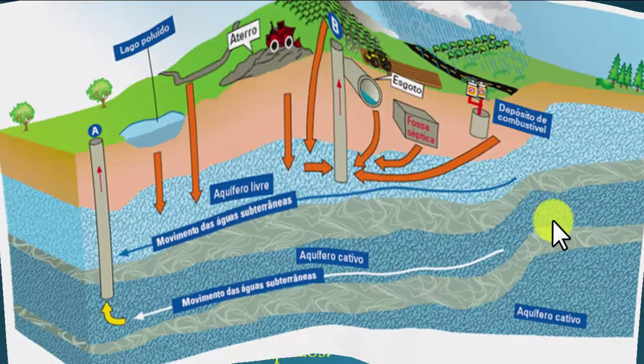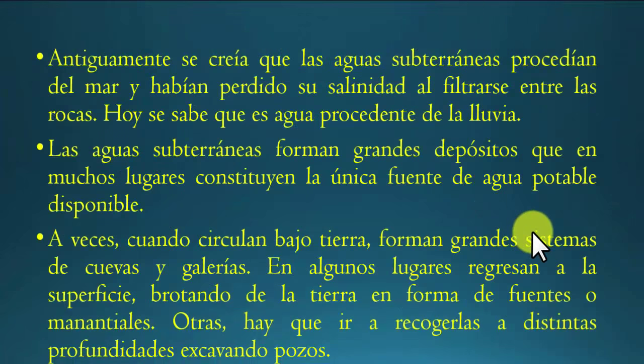Antiguamente se creía que las aguas subterráneas procedían del mar y habían perdido su salinidad al filtrarse entre las rocas. Hoy se sabe que es agua procedente de la lluvia. Muchos pensaban que el mar se infiltraba a través de la roca y encontraba galerías por las cuales se movía, y que con el tiempo las sales se precipitaban y el agua quedaba desalinizada de manera natural. A medida que la tecnología avanza, la gente va entendiendo que estos procesos se dan de esta manera en la naturaleza.